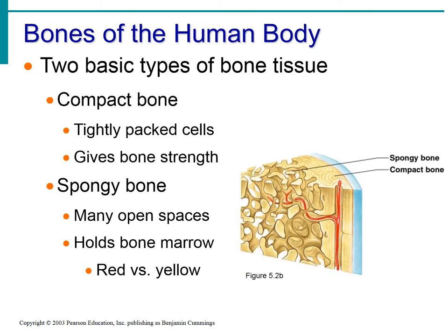This goes along with page 17 in your coloring book, which shows a long bone — actually a picture of the femur. On that page it talks about compact bone and cancellous (also called spongy) bone, as well as red and yellow bone marrow. Compact bone is what people think of as bone — that thick, hard outer layer. When you touch bone, you're touching compact bone, and that's what gives the bone its strength.